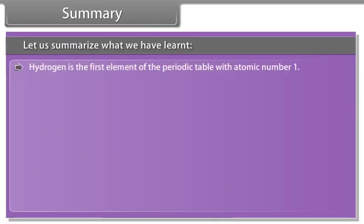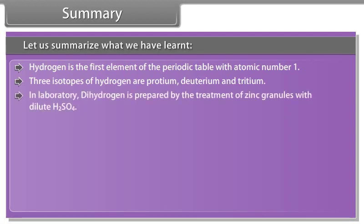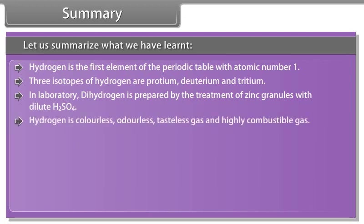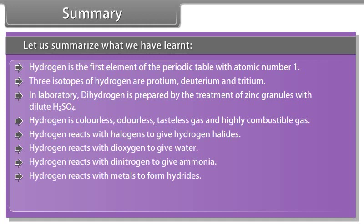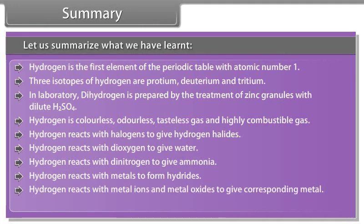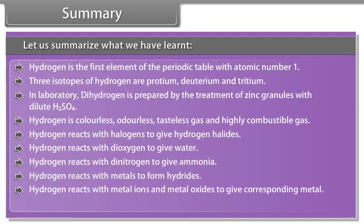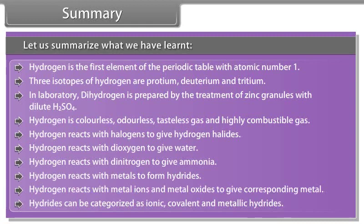Summary. Let us summarize what we have learnt. Hydrogen is the first element of the periodic table with atomic number 1. Three isotopes of hydrogen are proteum, deuterium and tritium. In laboratory, dihydrogen is prepared by the treatment of zinc granules with dilute sulphuric acid. Hydrogen is colourless, odourless, tasteless gas and highly combustible gas. Hydrogen reacts with halogens to give hydrogen halides. Hydrogen reacts with dioxygen to give water. Hydrogen reacts with dinitrogen to give ammonia. Hydrogen reacts with metals to form hydrides. Hydrogen reacts with metal ions and metal oxides to give corresponding metal. Hydrides can be categorized as ionic, covalent and metallic hydrides.